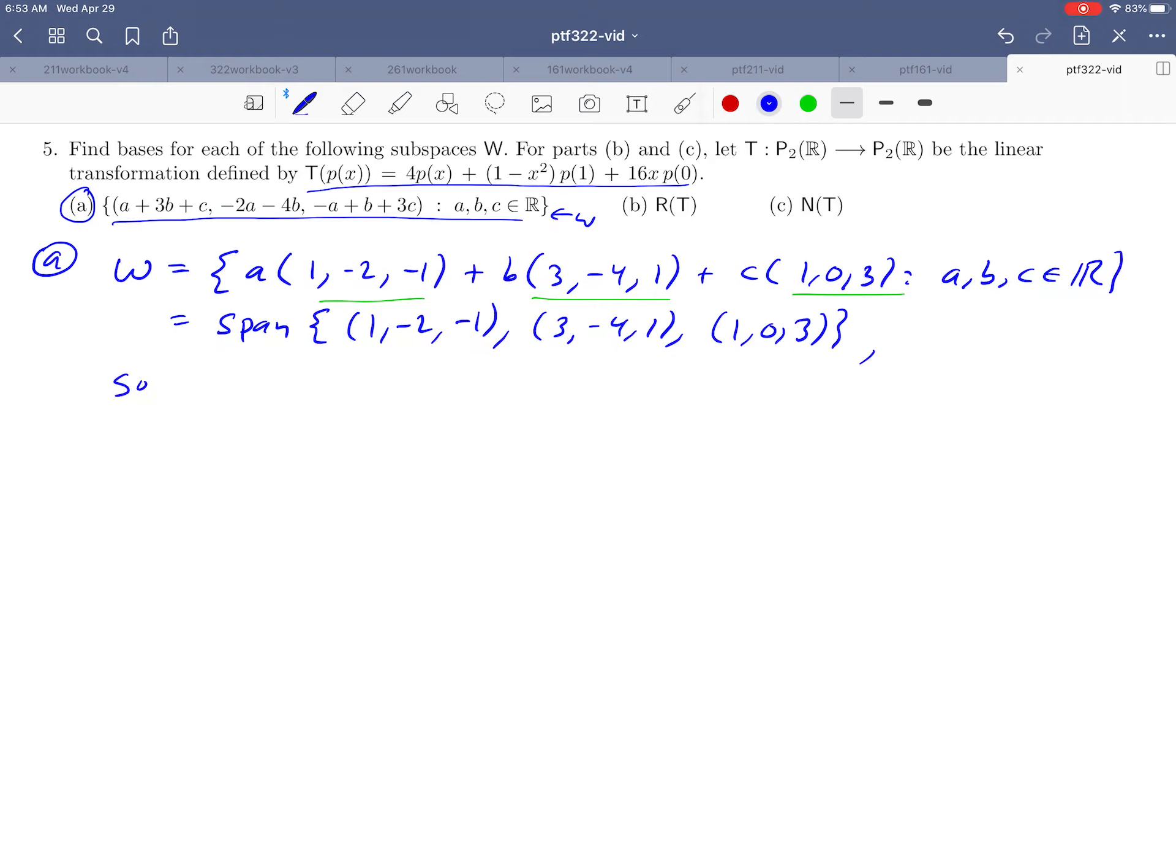What we've done so far is to find a generating set for W. I'm going to call it G. So G equals {(1, -2, -1), (3, -4, 1), (1, 0, 3)} is a generating set.